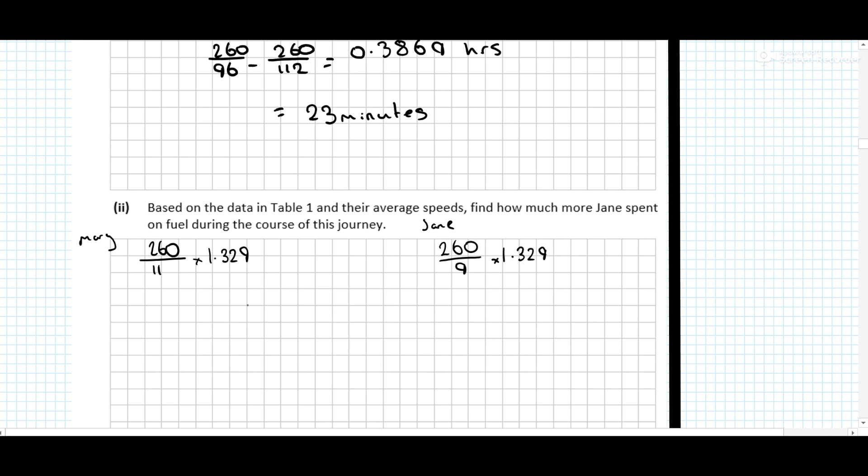And then we can subtract them away from each other to actually find the difference. So 260 divided by 11, which is 31.4127. And this is 260 divided by 9 multiplied by 1.329 is 38.3933. So we take them away from each other. And we get the difference. Difference is 6.98.